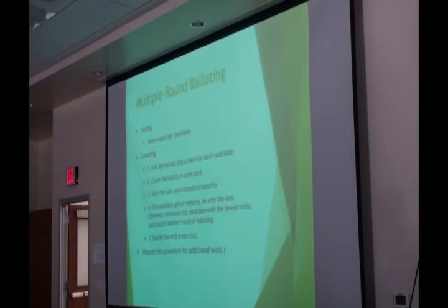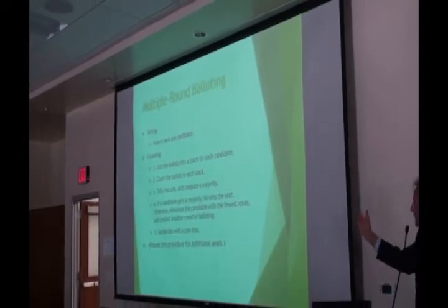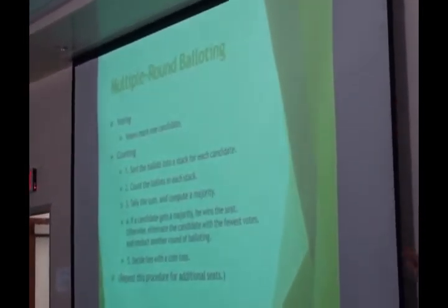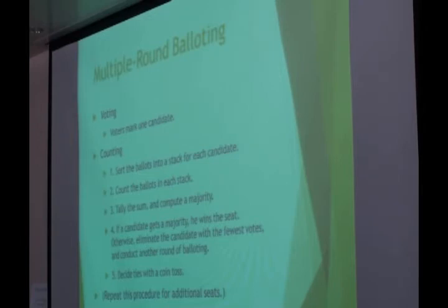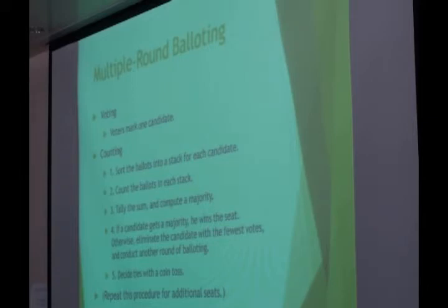Here in writing is the procedure just illustrated in pictures. Voting is done with one candidate marked. Counting is done by sorting the ballots into a separate stack for each candidate, counting the ballots in each stack, tallying the sum, getting the majority, and asking: does any candidate have a majority of the votes cast? If so, he's the winner. If not, the candidate with the fewest votes is eliminated and you go to another round of balloting. In large caucuses, this is why it took so long — they would go do another round of balloting over and over.